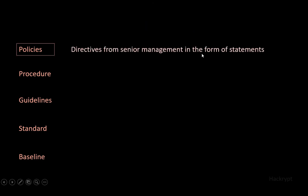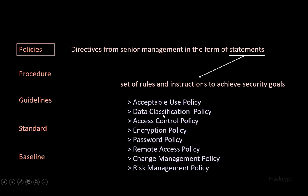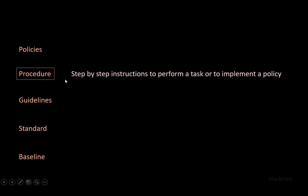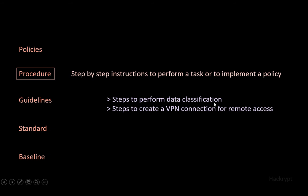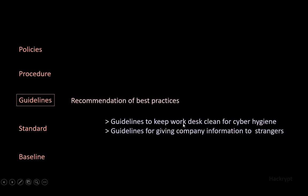Policies are directives from senior management in the form of statements — sets of rules and instructions to achieve security goals. Examples include acceptable use policy, access control policy, password policy, and remote access policy. Procedures are step-by-step instructions to implement a policy, such as steps to perform data classification or steps to create a VPN connection for remote access. Guidelines are recommendations of best practices, such as guidelines to keep workspaces clean for cyber hygiene or what information can be shared with a stranger about the company to prevent social engineering attacks.